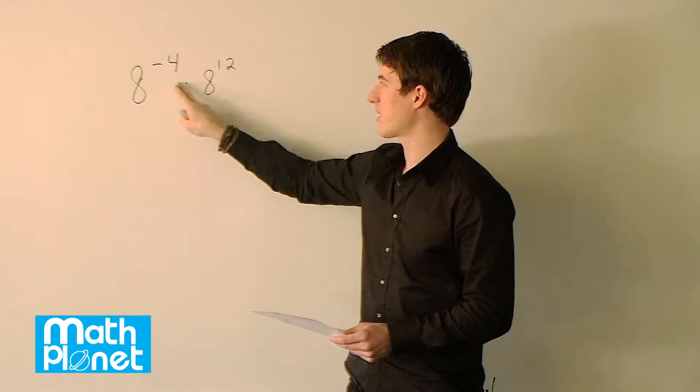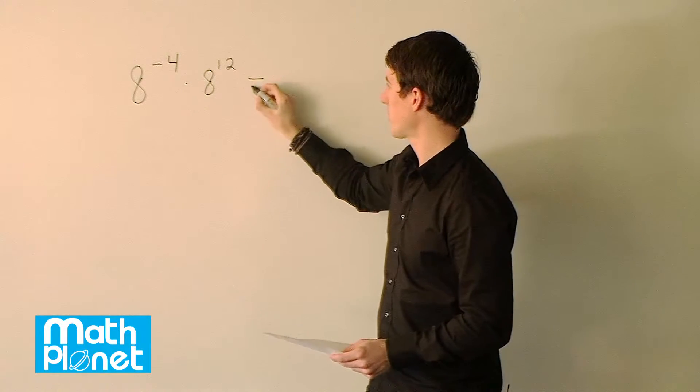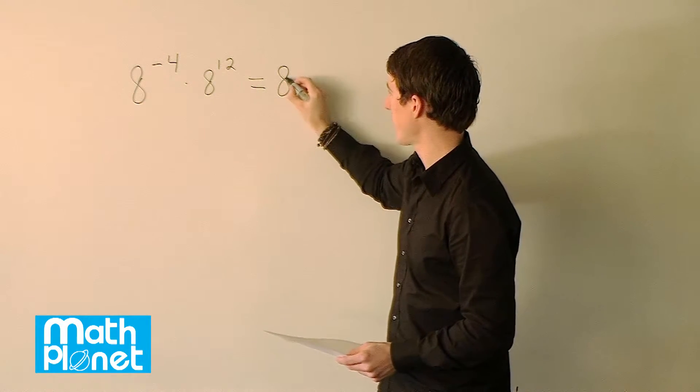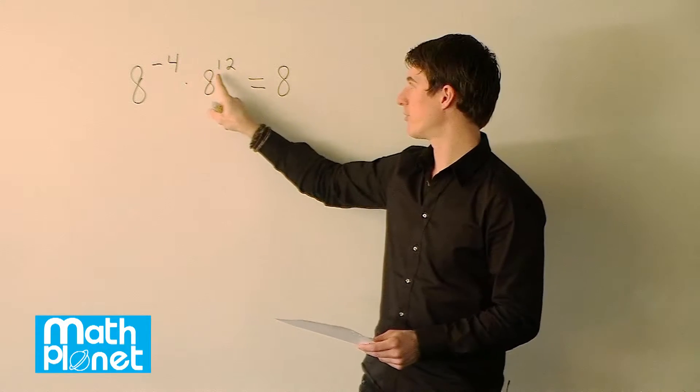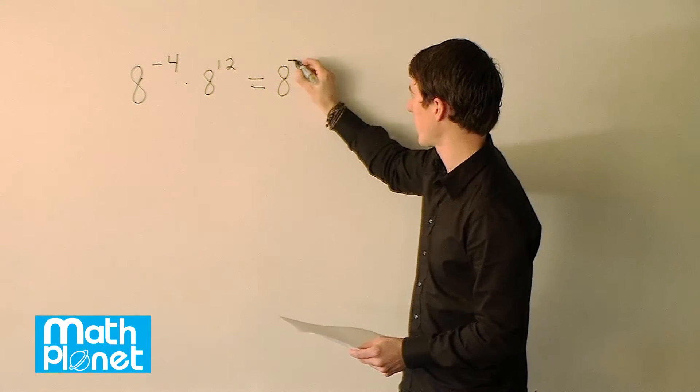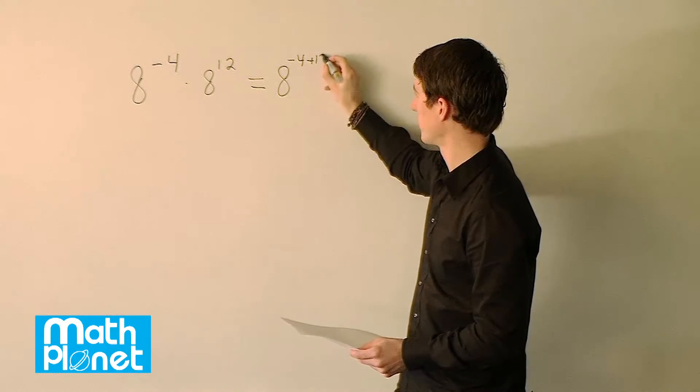So when we have the same base, we know that we can write them as just that base and then it's the sum of the indices or the exponents. So it's negative 4 plus 12 here.